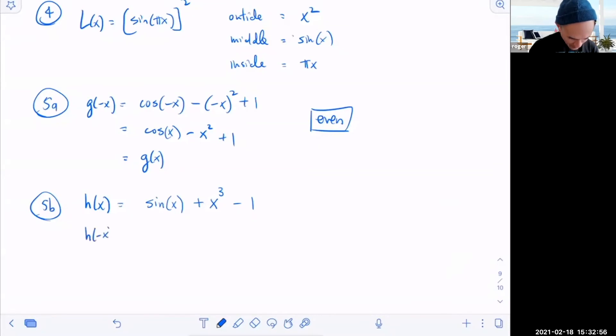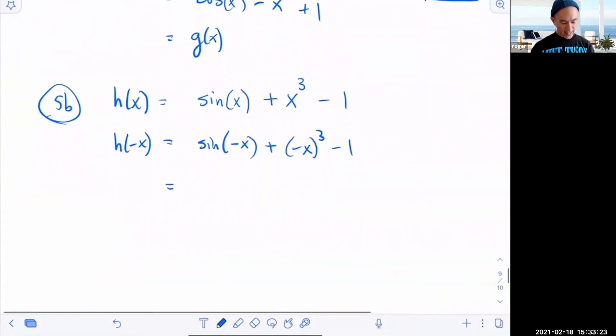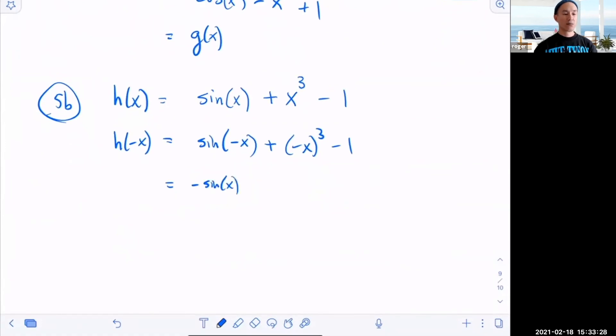So we want h of negative x. So what we're going to do is we're going to plug sine negative x plus negative x cubed minus one like this. And how does this thing simplify? Well, we know that sine is odd, so that means when you insert a negative x that's the same thing as negative sine of x. Then the next guy is a negative x cubed. So you can really write this like negative one cubed x cubed, and you got minus one. Now as you probably know, negative one raised to an odd power is just negative one. So this basically becomes negative sine x minus x cubed minus one.